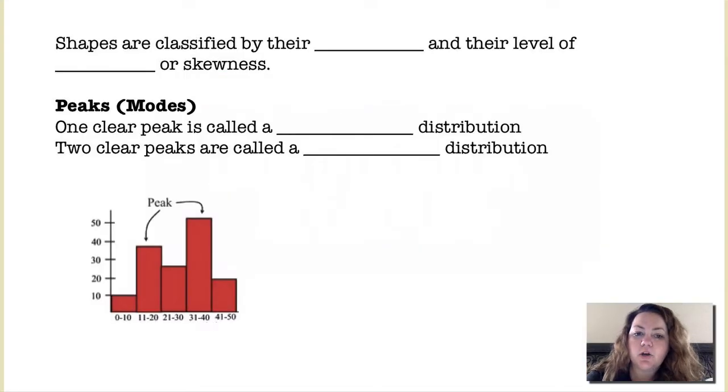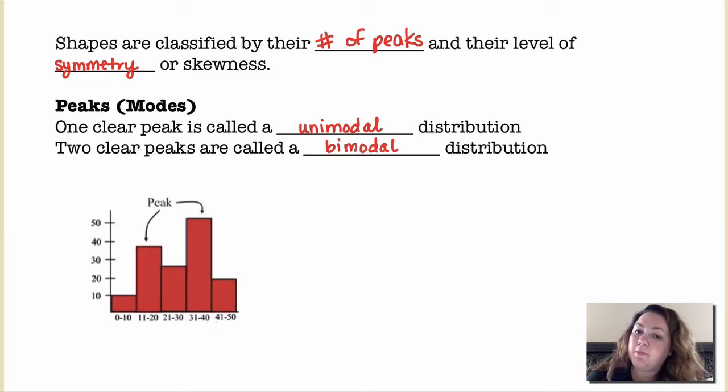Shapes are classified by their number of peaks and their level of symmetry or skewness. If a distribution has one clear peak it's called a unimodal distribution. If there are two clear peaks it's called a bimodal distribution. Peaks would just be like higher parts of the distribution.